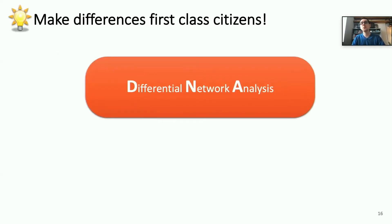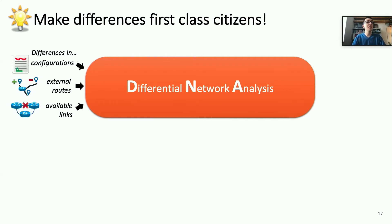To address these limitations, we design a network analysis framework where differences are first-class citizens, and we call our framework differential network analysis, or DNA. DNA takes as input not snapshots of configurations, routes, and available links, but rather differences in configurations, external routes, and available links since the last time that DNA was invoked. Internally, DNA analyzes these changes and produces a set of differences in end-to-end behavior as output. For example, a list of destinations that are now unreachable or waypoints that are no longer traversed.